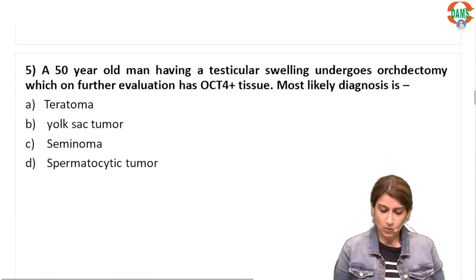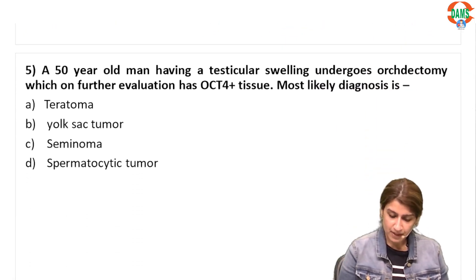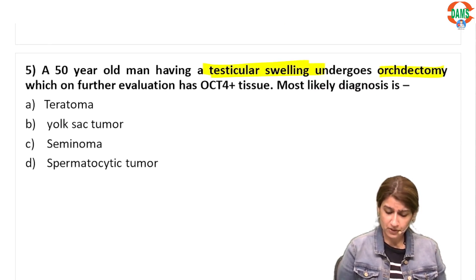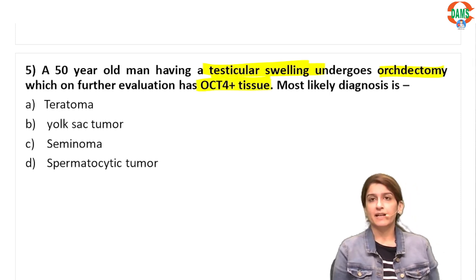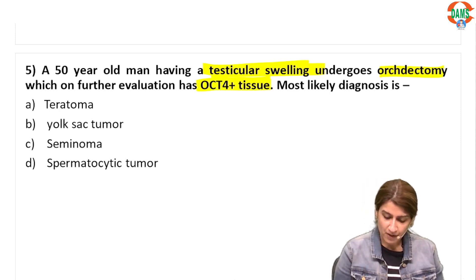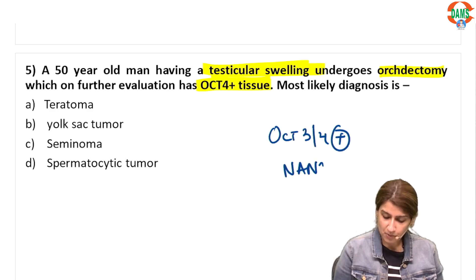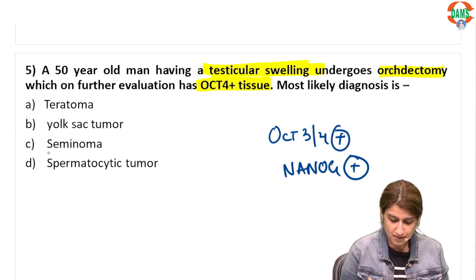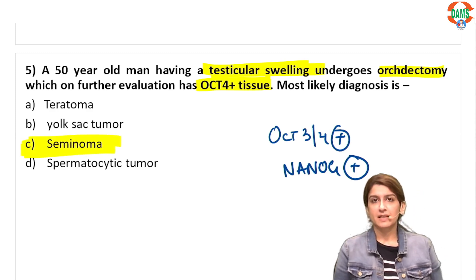A 50-year-old man with testicular swelling undergoes orchidectomy; further evaluation shows OCT4-positive tissue. The characteristic IHC markers are OCT3/4 positive and NANOG positive — these are the important markers for seminoma. The correct answer is option C, seminoma.